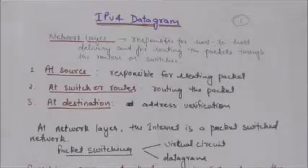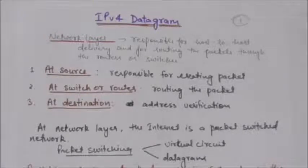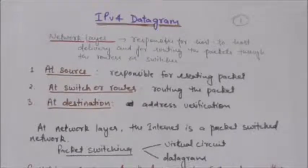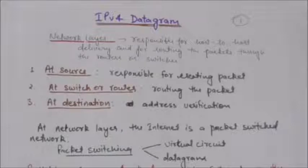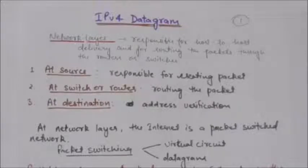The network layer is responsible for checking its routing table to find the routing information. In the packet, among other information, the header of this packet contains the logical addresses of the source and destination. If this packet is too large, then the packet is fragmented.